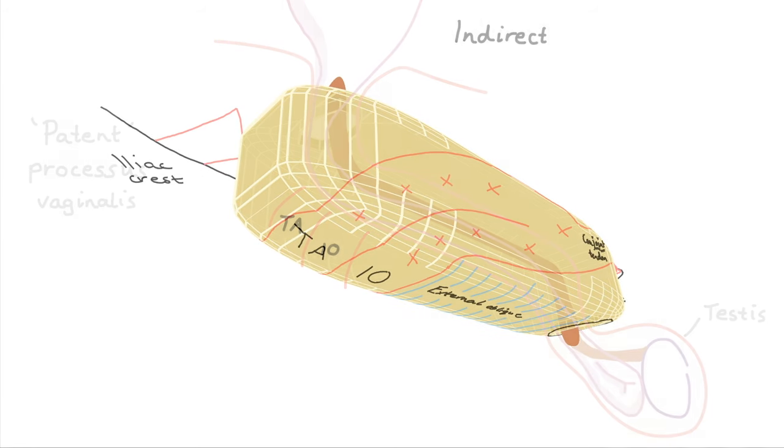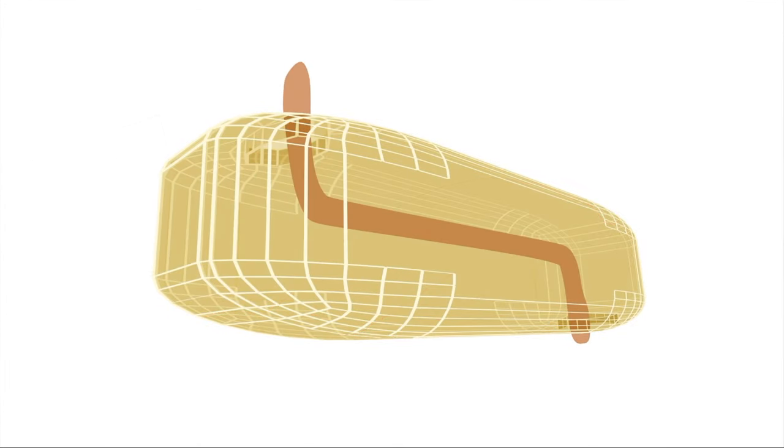Direct inguinal hernias are the result of various risk factors which are relevant to all other types of abdominal hernia. We're going to draw out the layers of the abdomen from this angle to get a better understanding of these risk factors.